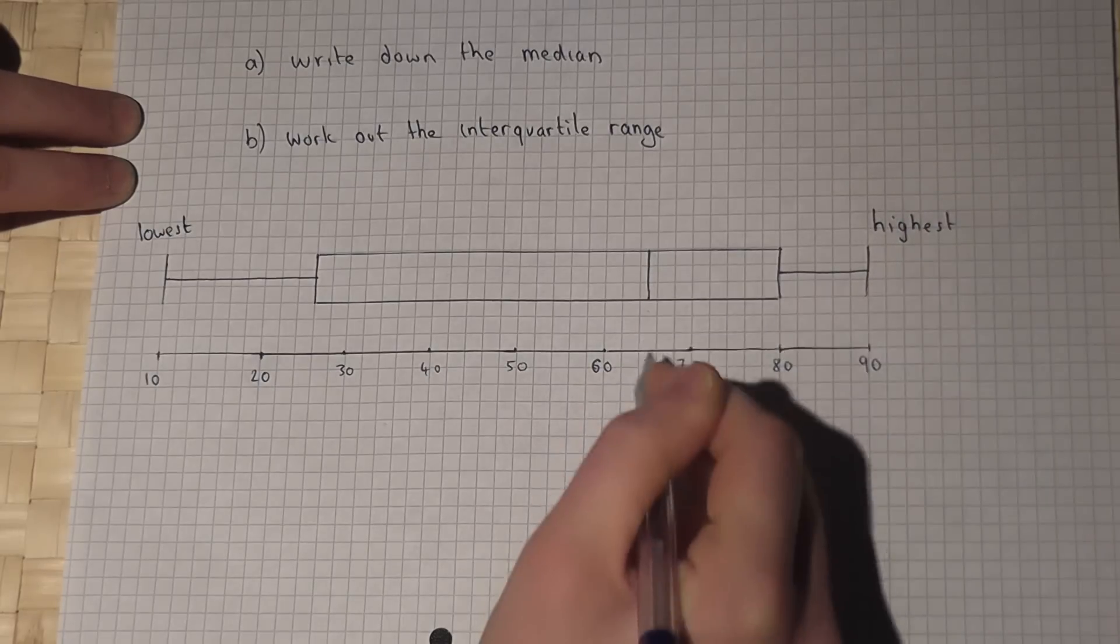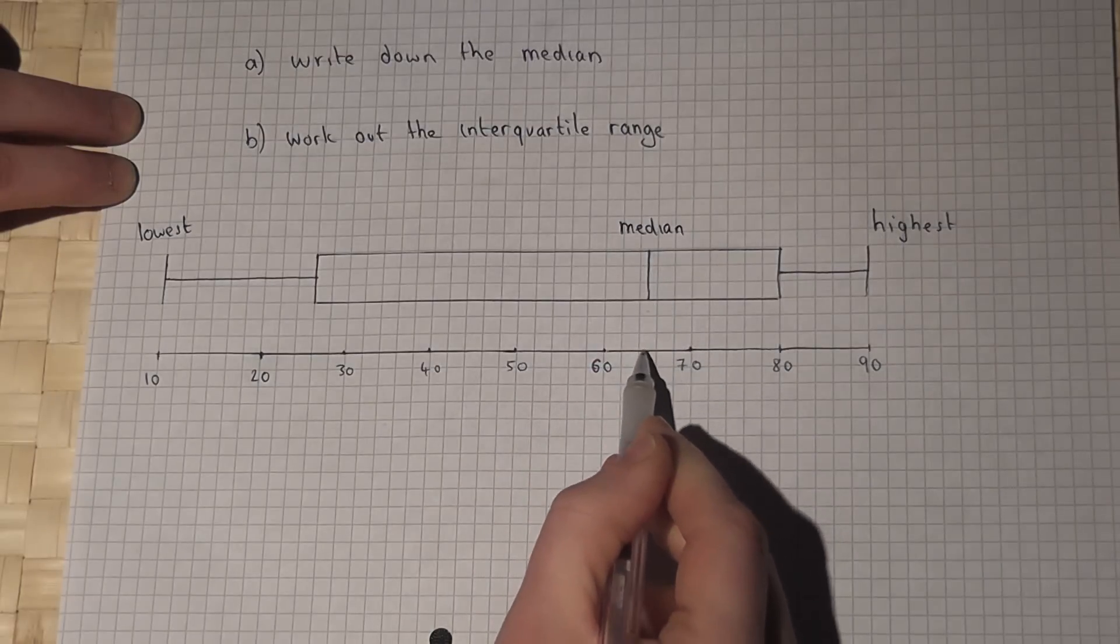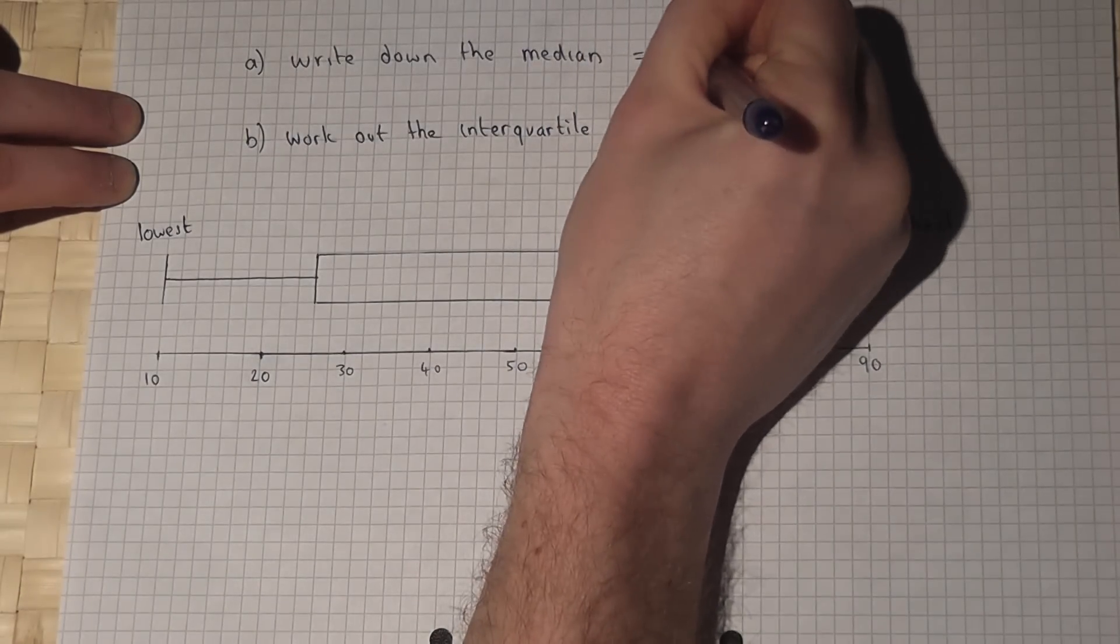Now the middle line is the median. So our median is here, which is 65.